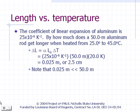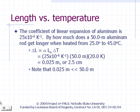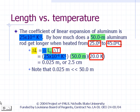Here's a simple example question dealing with linear expansion. If you were to look up the coefficient of linear expansion of aluminum, you will find it to be 25 × 10⁻⁶ per Kelvin. By how much does the length of a 50 meter aluminum rod increase if it is heated from 25 to 45 degrees Celsius? The change in length is equal to alpha, which is 25 × 10⁻⁶ per Kelvin, times the original length of 50 meters, times the change in temperature, which is 20 Kelvin.